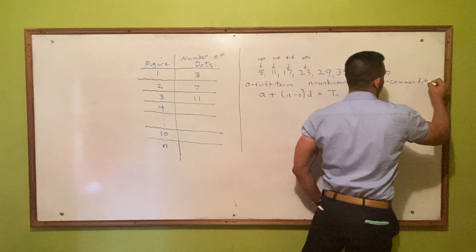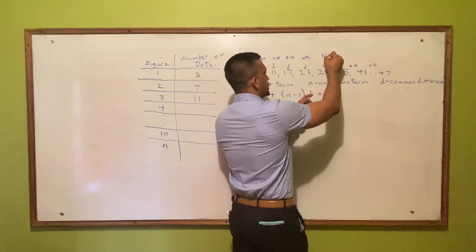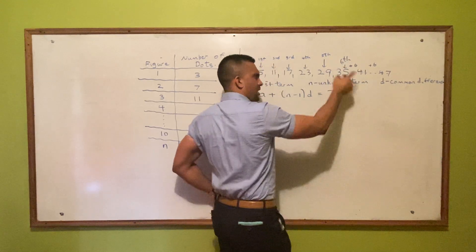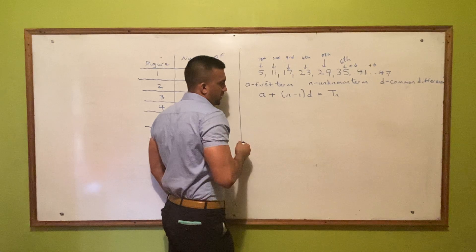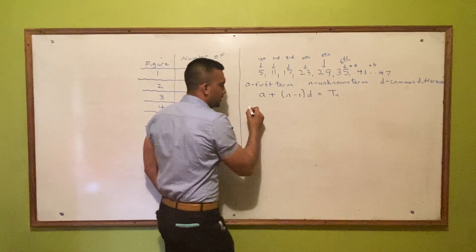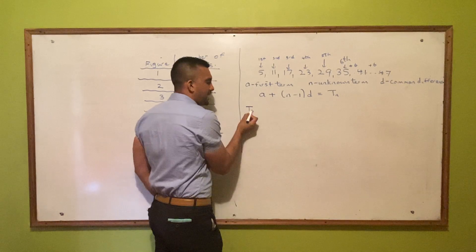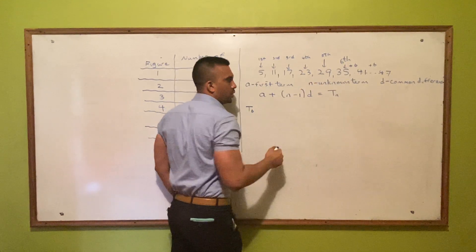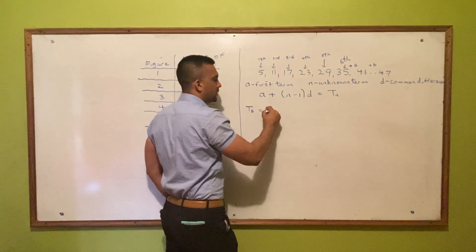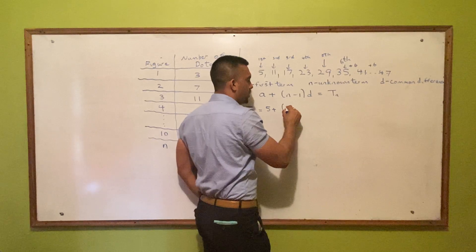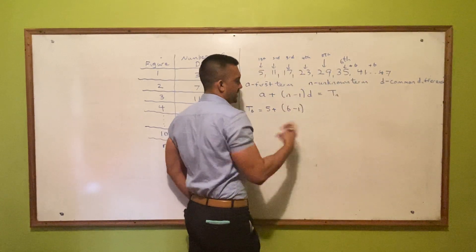So in this case, the sixth term is 35. Let's use the formula to verify it. Pretend we don't know the sixth term. t6 means n equals 6, since n represents the term you want to find. So t6 = a + (n - 1) × d, where a is the first term which is 5, plus (6 - 1) times d, the common difference which is 6.